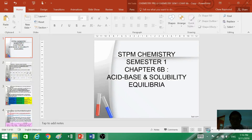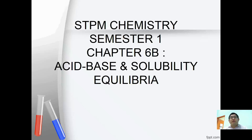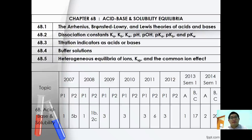We are going to continue with a brand new chapter. We are going to discuss about acid-base and solubility equilibrium. In this chapter we are going to introduce Arrhenius, Bronsted-Lowry and Lewis theories of acid-base.